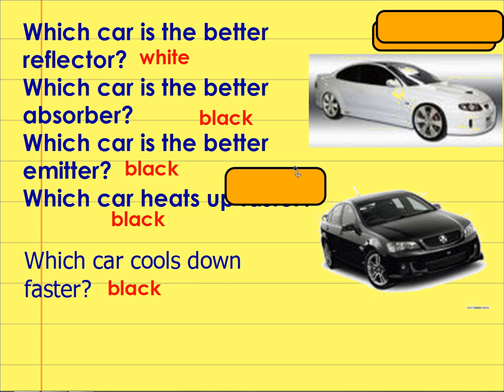Which one cools down faster? No, it isn't the white car. It's the black car. It heats up faster, therefore it cools down faster. The black car is both a better absorber and a better emitter. Kind of strange, isn't it?